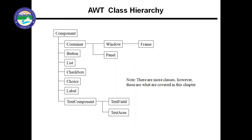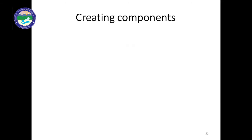These are the different components of the AWT class hierarchy. At the top we have Container and Component. Inside Container we have Window and Panel. Inside Window we can include Frames. Button, List, Checkbox, Choice, Label, and TextComponent are all components. TextComponent is divided into TextField and TextArea.